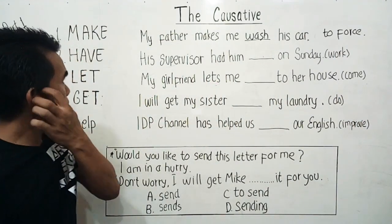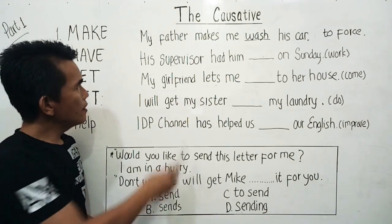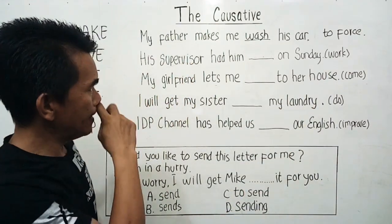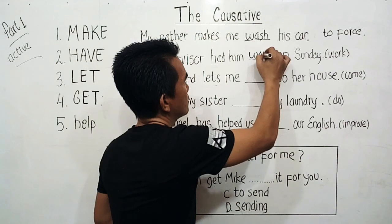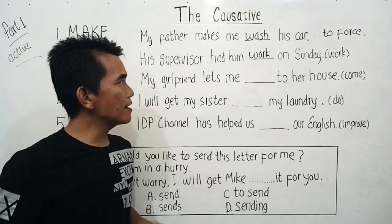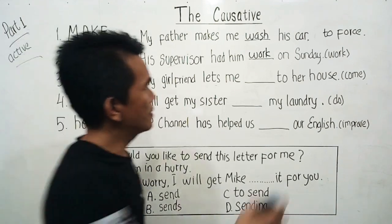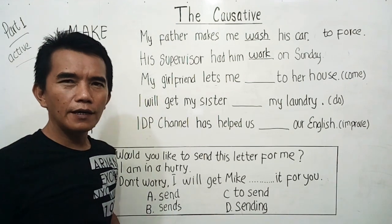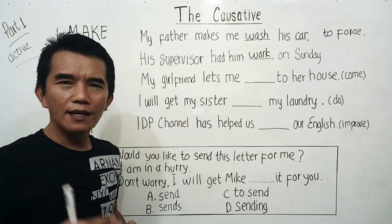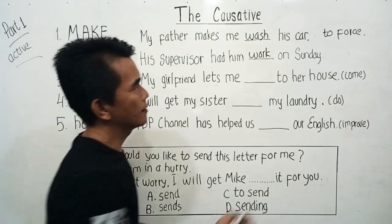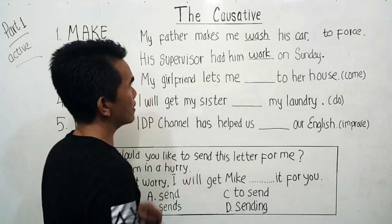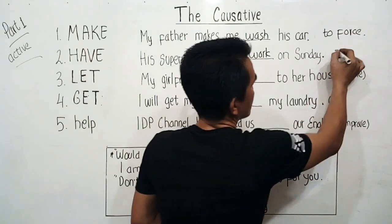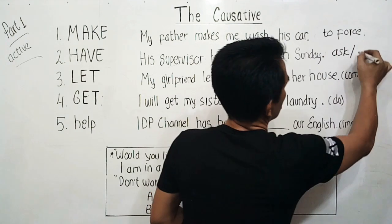Next, causative verb 'have': 'His supervisor had him ___ on Sunday.' The main verb is 'work,' so again here we use the base form: 'His supervisor had him work on Sunday.' When someone has us do something, it means they ask us or request us to do something politely. So 'have' as a causative verb means to ask or request.